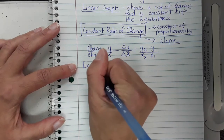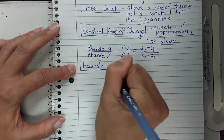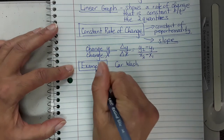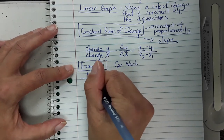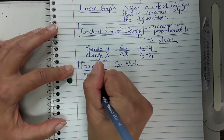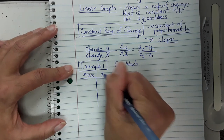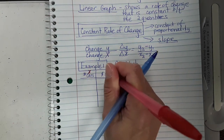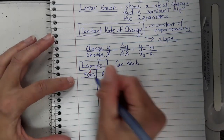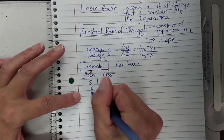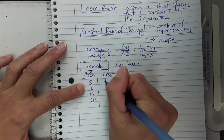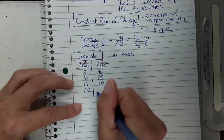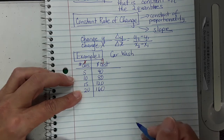The best way to show this is with an example. I'm going to tie the table and the graph together. Example one is a car wash. I'll create an XY table where X represents the number of cars and Y represents the cost. The numbers go by 5s: 5 cars costs $40, 10 cars costs $80, 15 costs $120, and 20 costs $160.